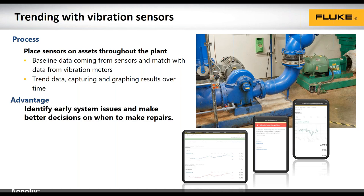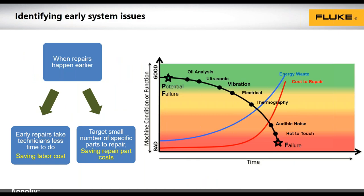The advantage is early warning — we know sooner and better. If information is power, the more we know, the better we can make our repairs. We want to identify information early: early repairs save labor, save cost, save machines, save production.